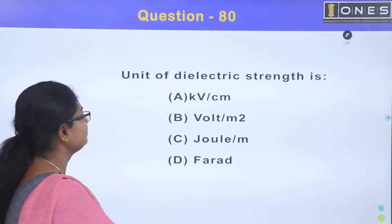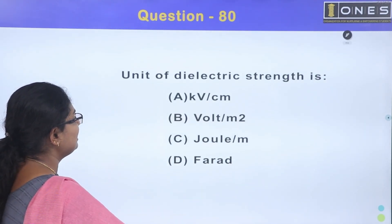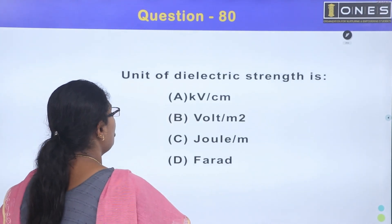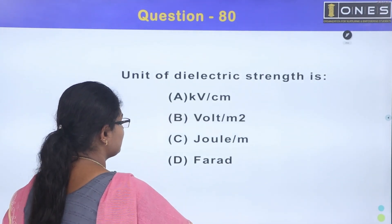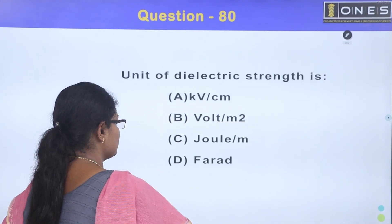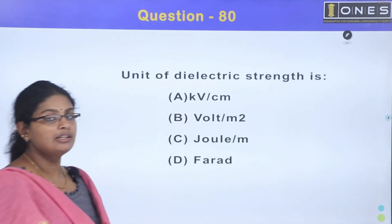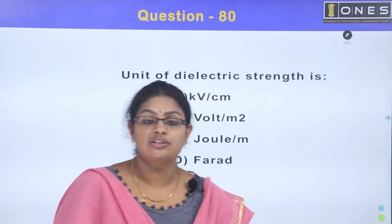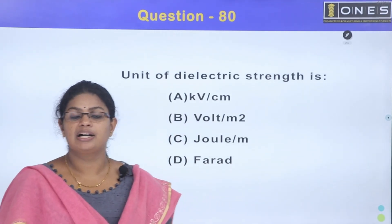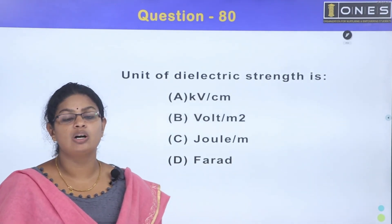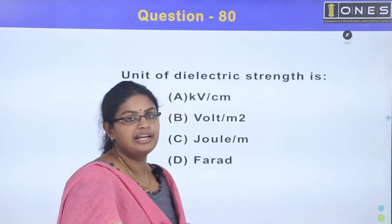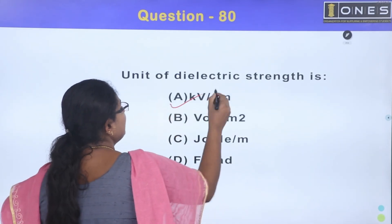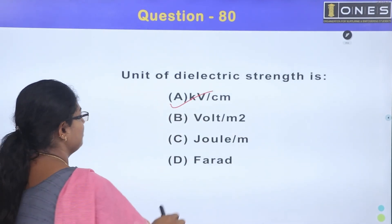Unit of dielectric strength is: Option A, kV per centimeter; Option B, volt per meter square; Option C, joule per meter; Option D, Farad. The dielectric strength of air is 30 kV per centimeter. The answer is Option A, kV per centimeter.